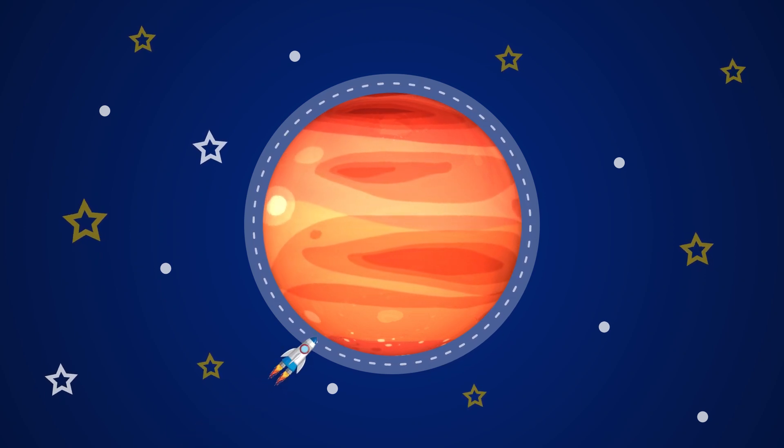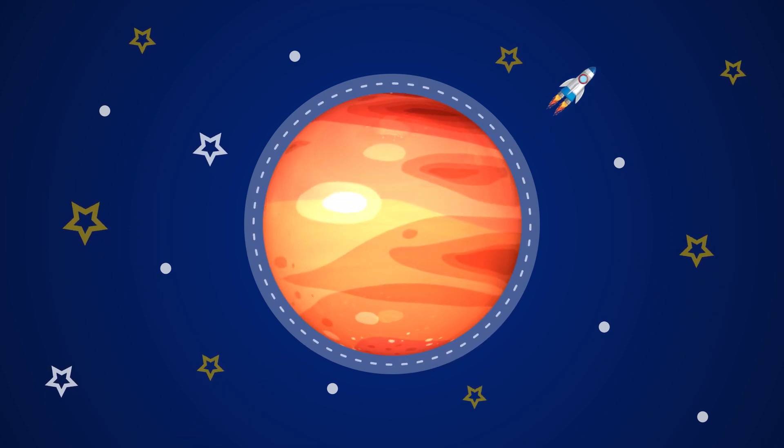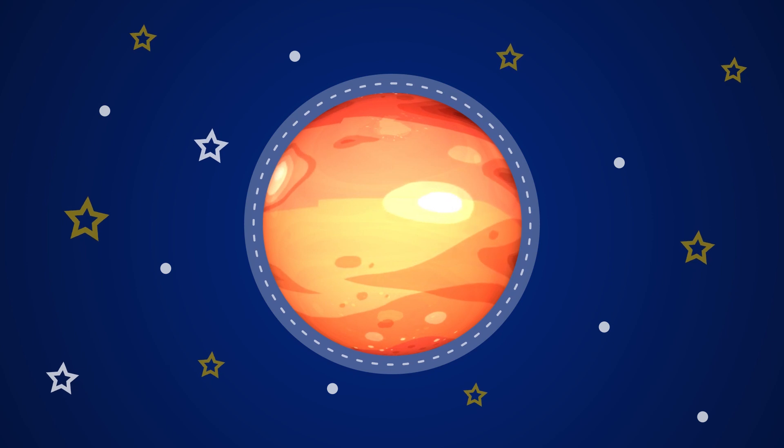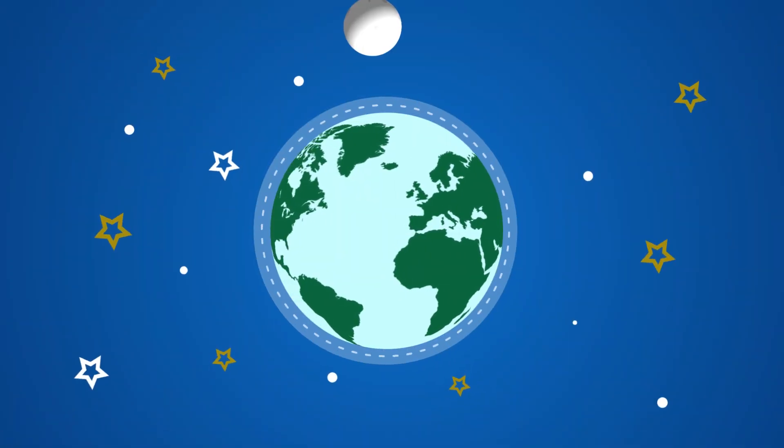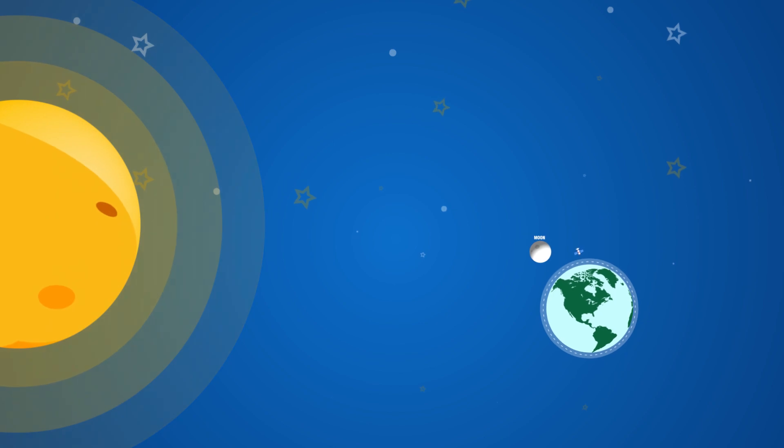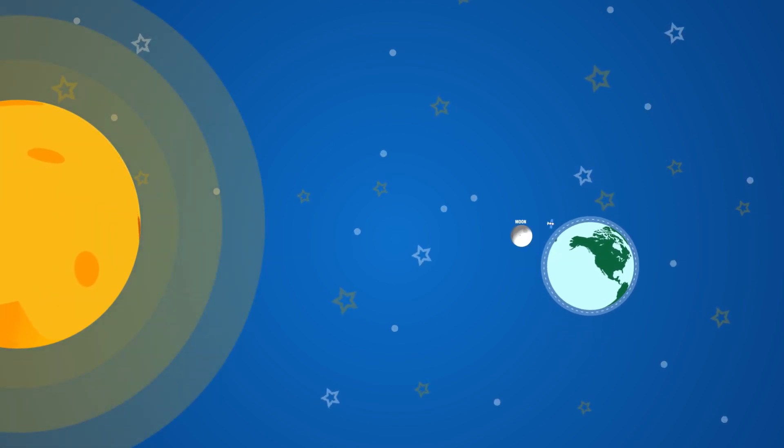Planets are large bodies which orbit around a specific star and get all their light from that star. Earth is a planet and we are orbiting around the sun, which is a star, and we receive light from it.